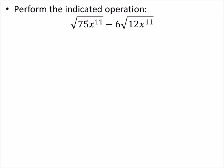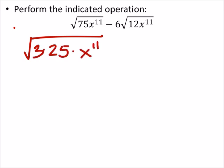So, for example, 75 is going to split up into the square root of 3 times 25 times x to the power of 11. And this would end up being, I guess maybe I should have switched those, the square root of 3 times the square root of 25 times the square root of x to the 11th.